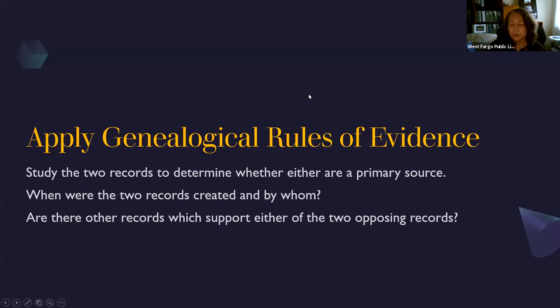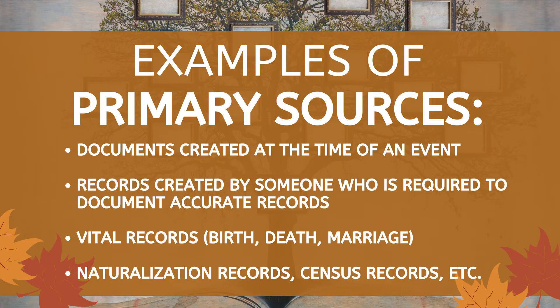You apply genealogical rules of evidence, and there are quite a few of those — a lot of them are just rules of thumb. Basically, you study the two records that are giving you the conflict and determine whether either of them is a primary source — that is, the source for the particular piece of information that is in conflict. For instance, you might have a census record that has a birth year of about 1854, but you have an actual birth certificate that says 1853 on the 31st of December. So you take the record that is the primary for that particular piece of information and give it a little extra weight.